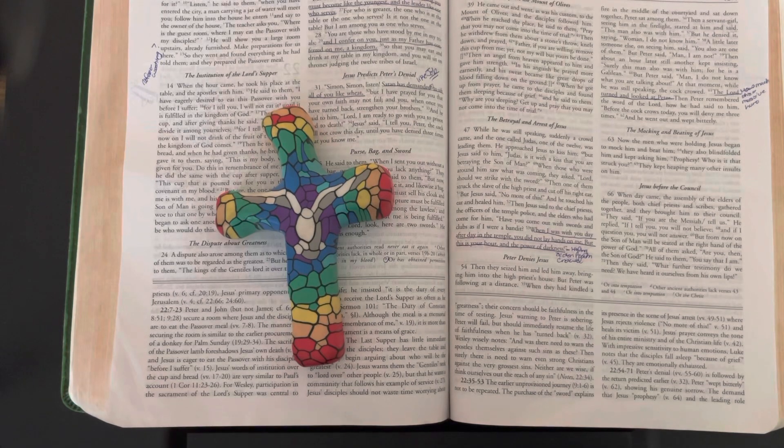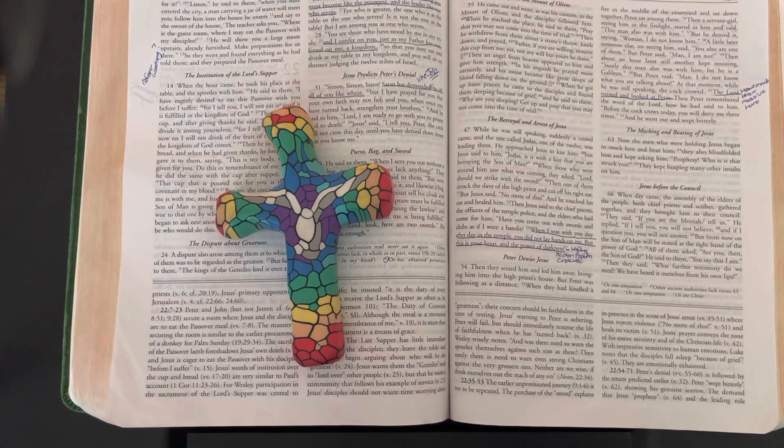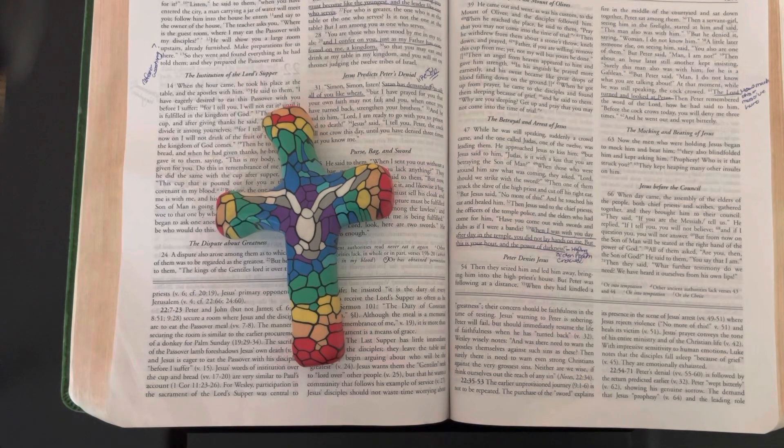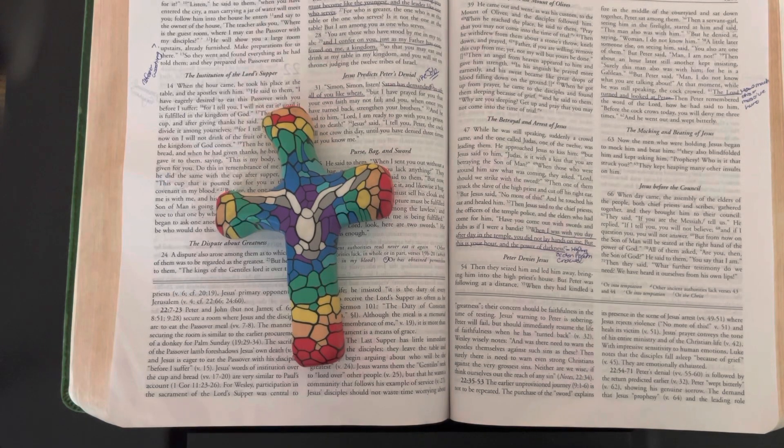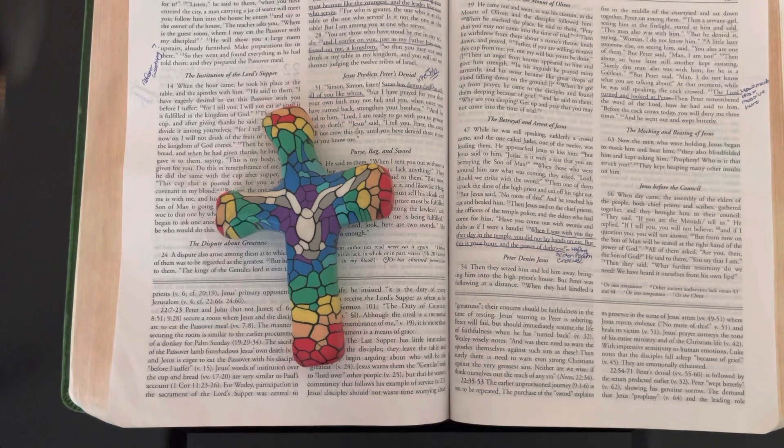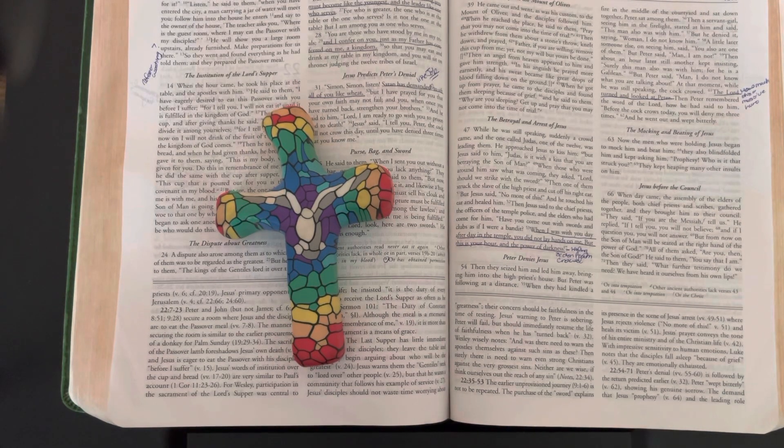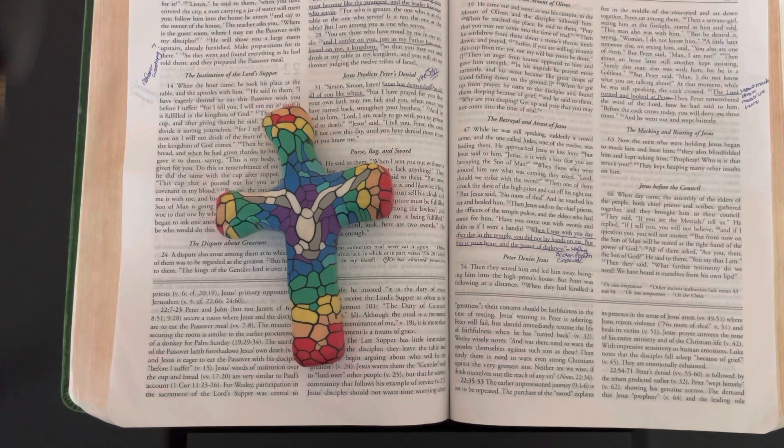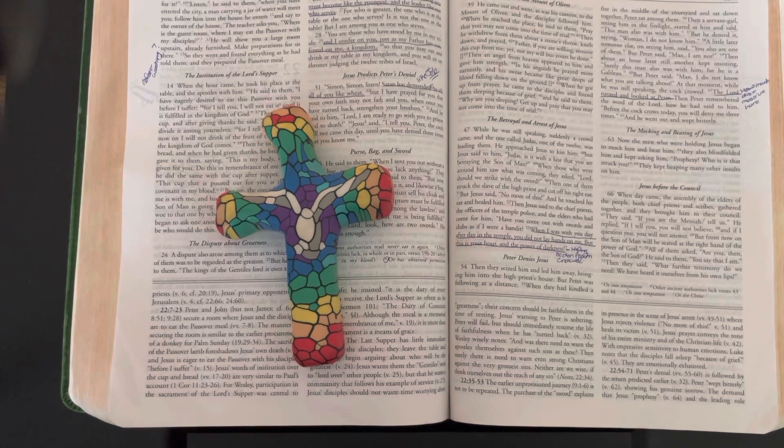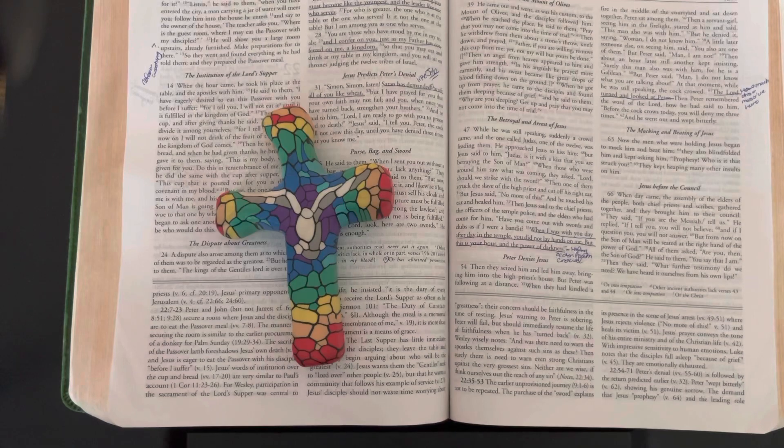Then an angel from heaven appeared to him and gave him strength. In his anguish he prayed more earnestly, and his sweat became like great drops of blood falling down on the ground. When he got up from prayer, he came to his disciples and found them sleeping because of grief, and he said to them, "Why are you sleeping? Get up and pray that you may not come to the time of trial."